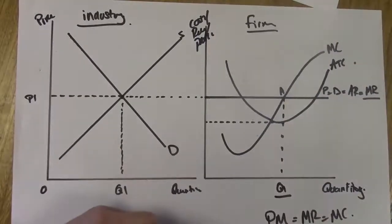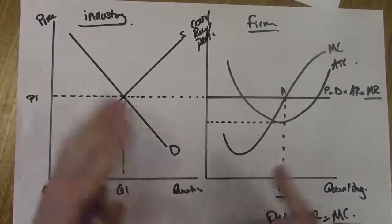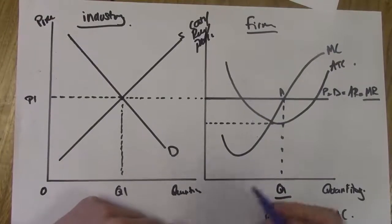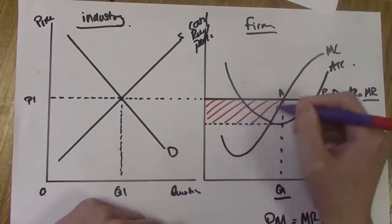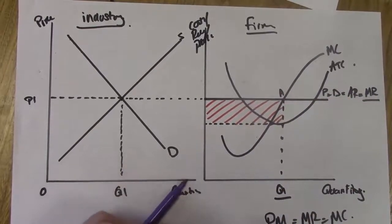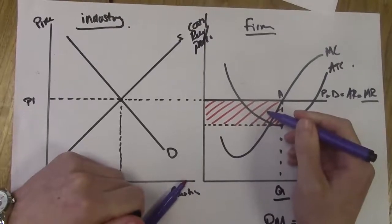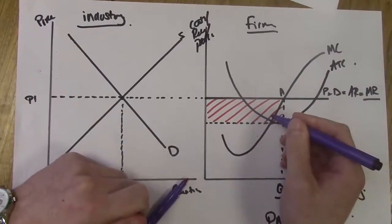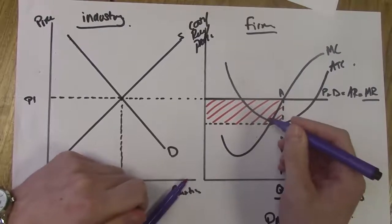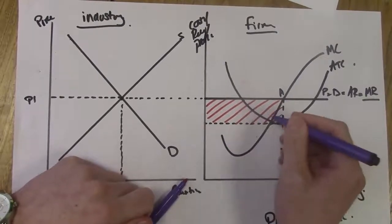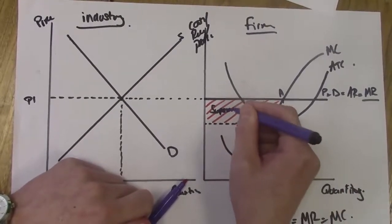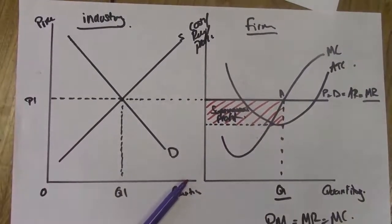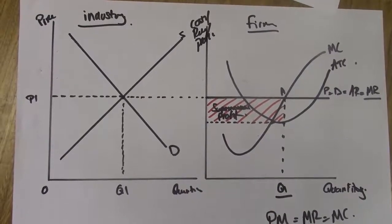Dash lines indicate the line we're drawing is not actually a curve. In the exam, you won't have different colored pens and you won't be awarded for them — do not spend too long drawing elaborate diagrams; keep them neat but practice drawing them quickly. Shade in the area between these lines — this shaded area is the area of supernormal profit. Label it properly as 'supernormal profit', not just 'SN profits'.